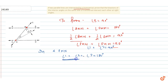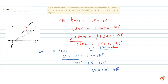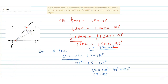Since angle 1 plus angle 2 plus angle 3 equals 180 degrees, and angle 1 plus angle 2 equals 90 degrees, we get angle 3 equals 180 degrees minus 90 degrees, which equals 90 degrees. So angle 3 equals 90 degrees. That means the angle bisectors of the interior angles on the same side of the transversal intersect at 90 degrees. This is the answer to this question.